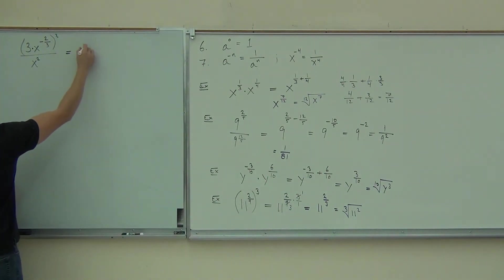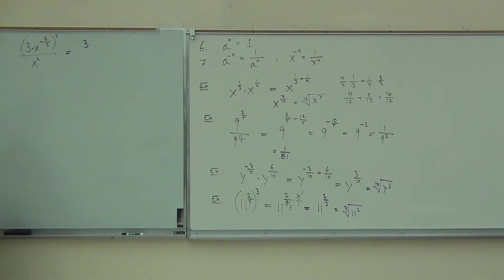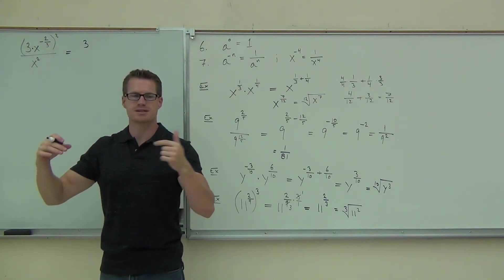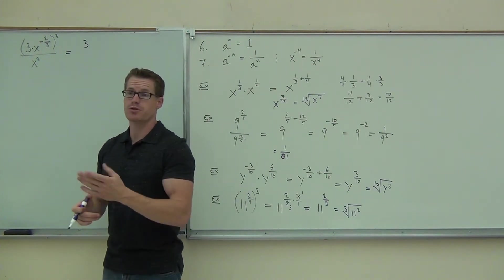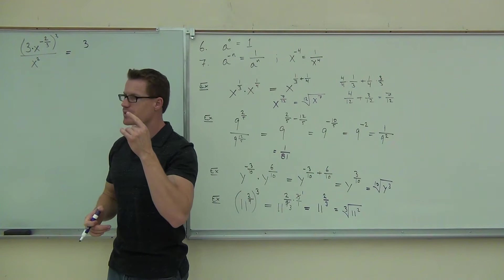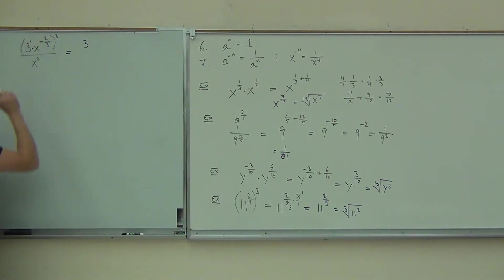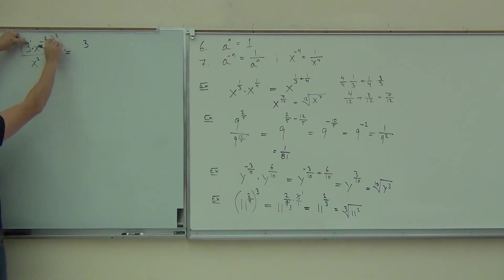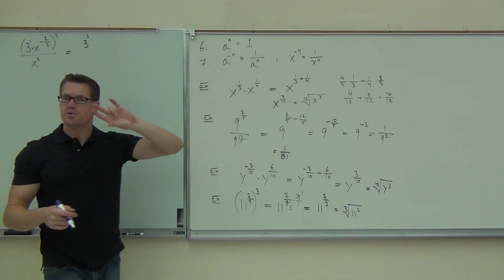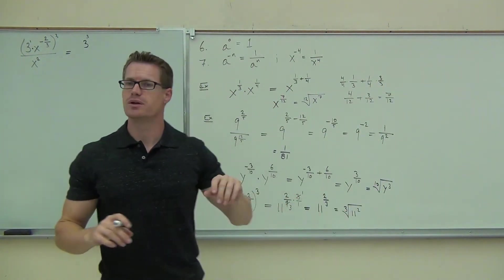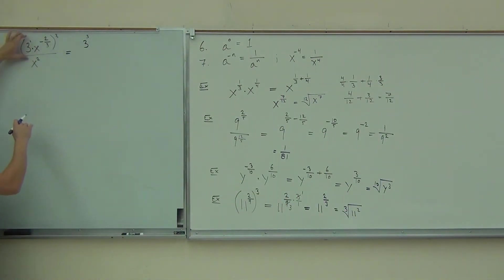The three is also getting raised to the third power. So instead of three, I'm going to have 27, or three to the third. This is three to the first power, so really what you're doing is one times three — that's how we're getting three to the third. When you have an exponent raised to an exponent, we multiply every single time. You just need to know that this three to the first power is also being raised to that exponent.